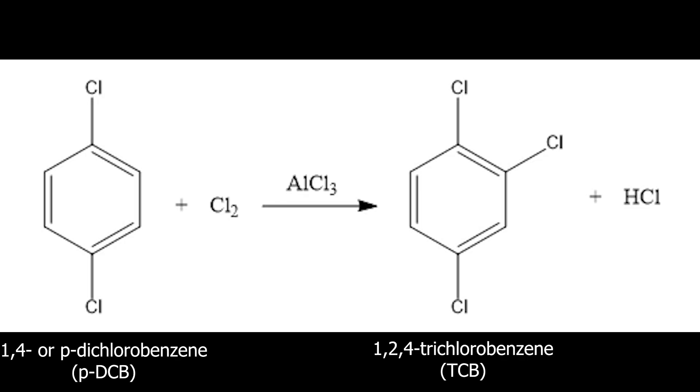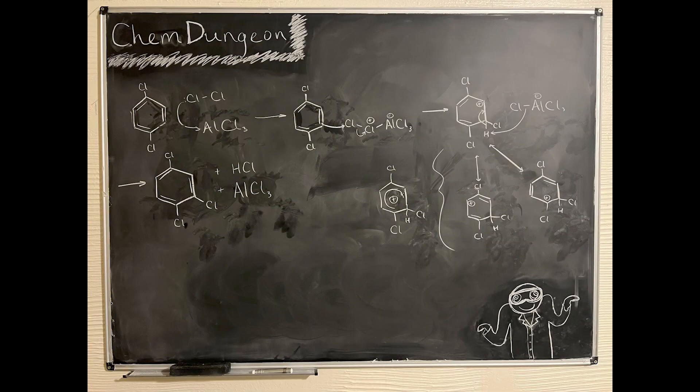In this video, I'm going to be further chlorinating PDCB to TCB using anhydrous aluminum chloride as the Lewis acid catalyst. It's analogous to the electrophilic aromatic substitution mechanism for the previous two chlorinations, so I'm not going to go into it.